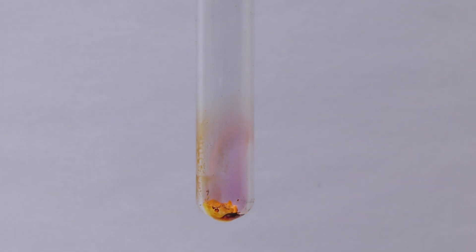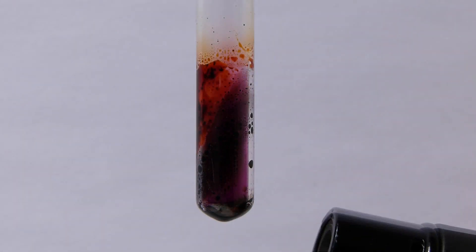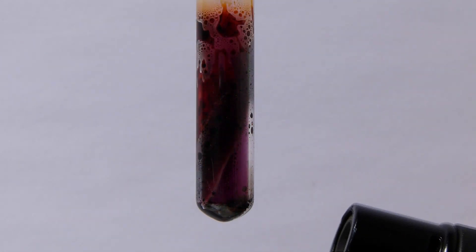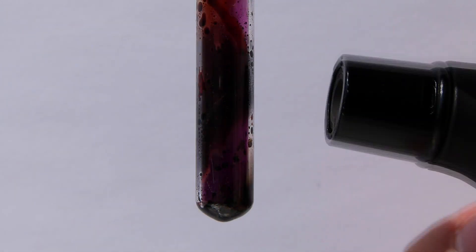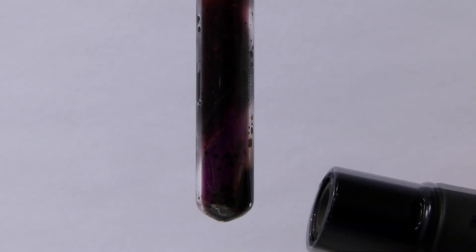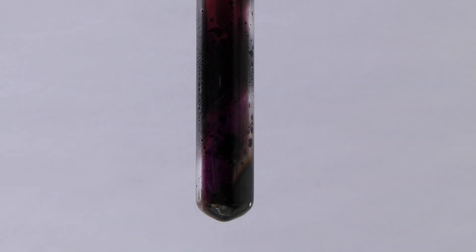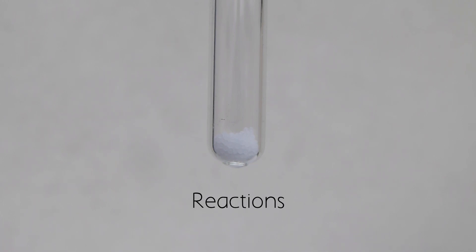When heated with a flame, iodoform quickly melts and boils while decomposing into iodine, hydrogen iodide and carbon. You can see the very nice purple vapors of the iodine coming off. As for reactions,